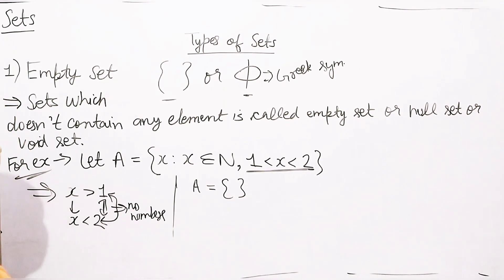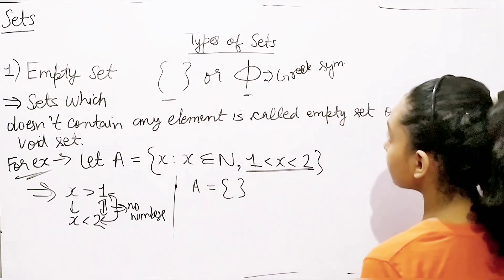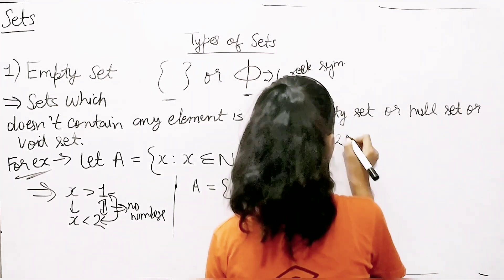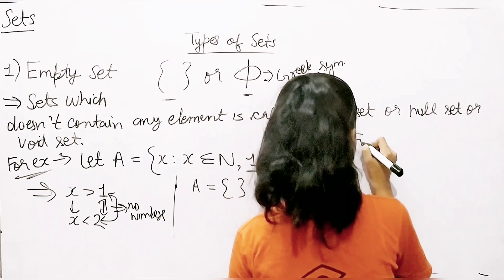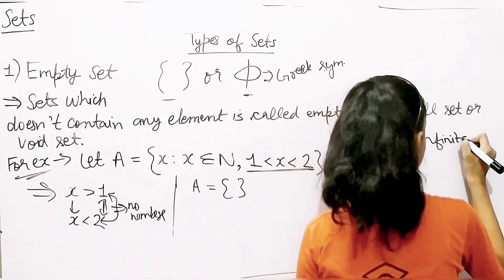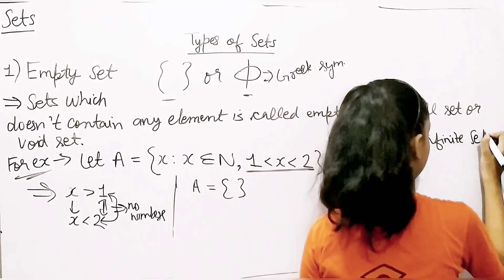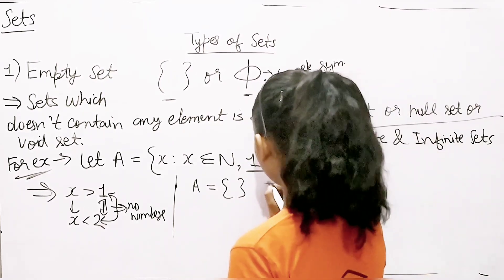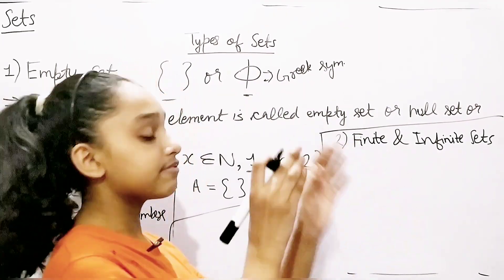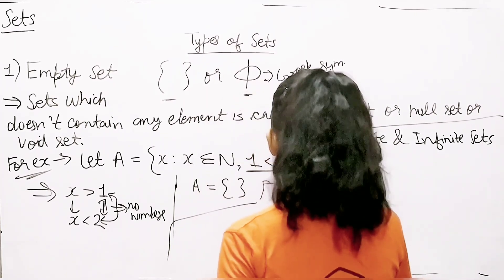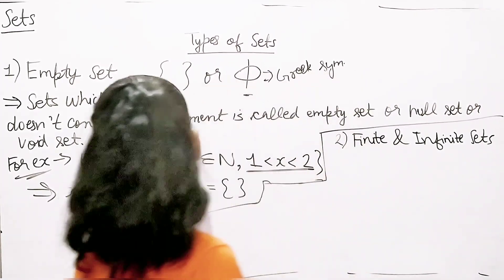I hope that's clear. Now let's move on to our second type of set. So the second and third types are the finite set and infinite set. I'm going to write them together because through the definition we can understand both sets at once.